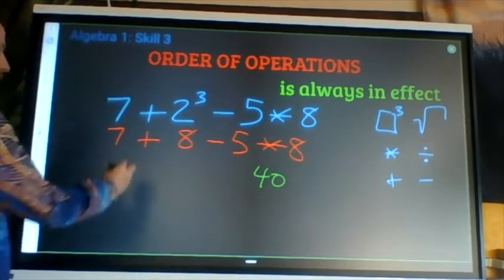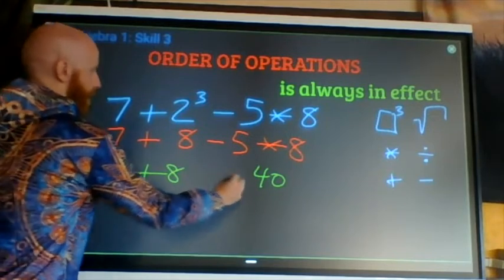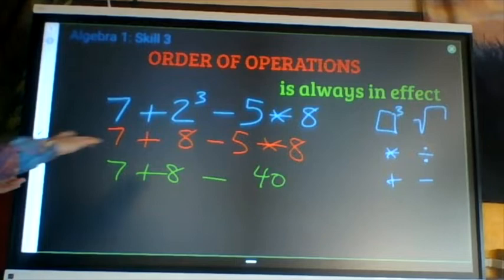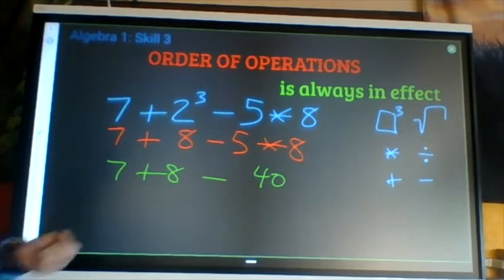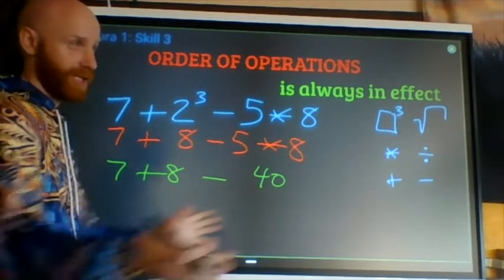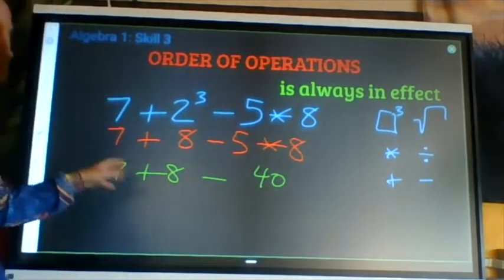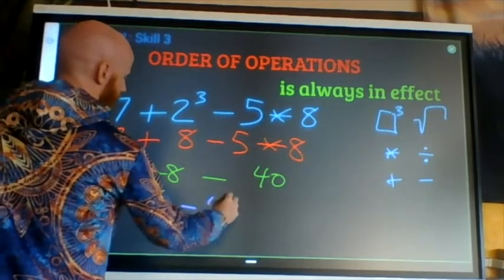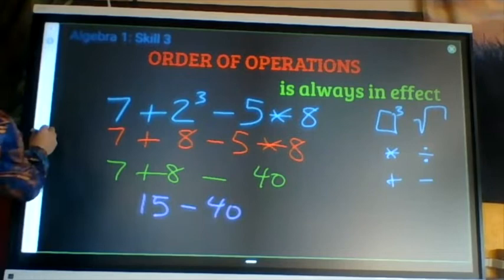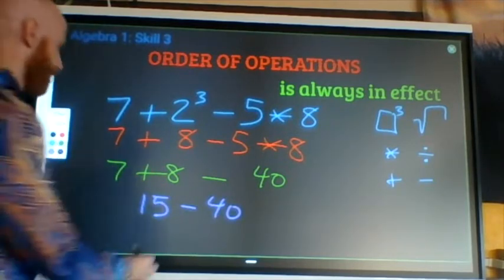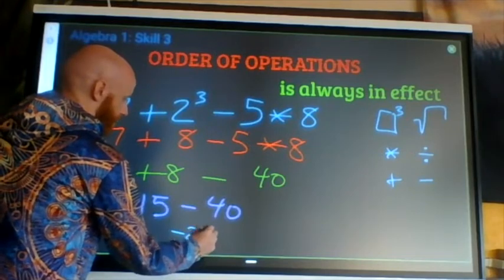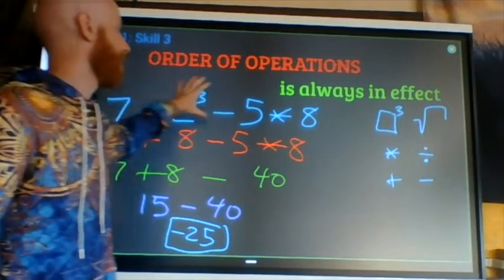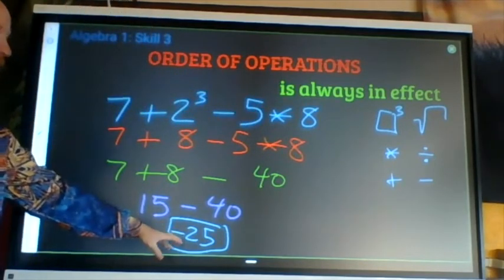And we're bringing everything else down. Seven plus eight minus. Finally, at this level, addition and subtraction have the same amount of power. So we just work from left to right. Seven plus eight is 15. And 15 minus 40 is negative 25. So all of this simplifies down to negative 25.